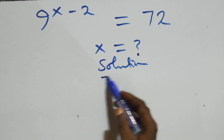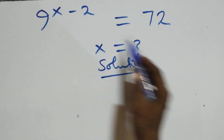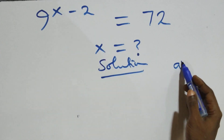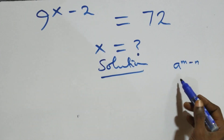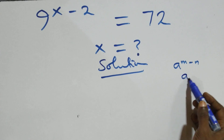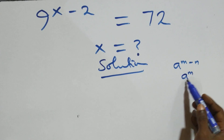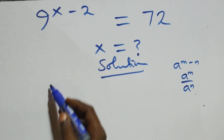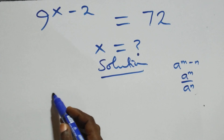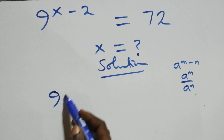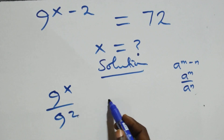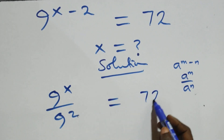What do we have here? We have a raised to power n minus n, which is simplified as a raised to power n over a raised to power n. This becomes 9 raised to power x over 9 squared, which is equal to 72.